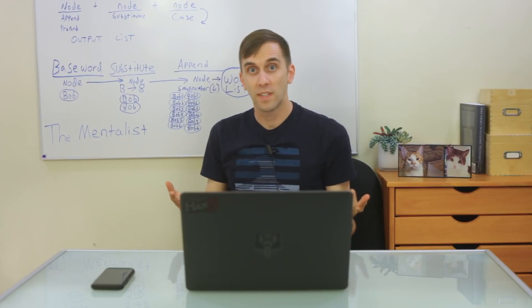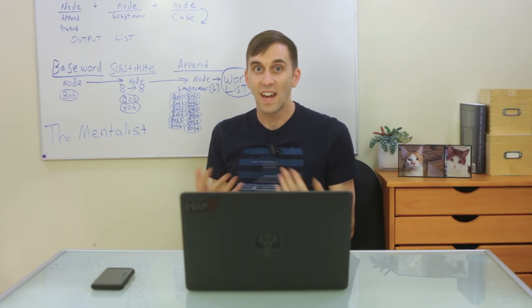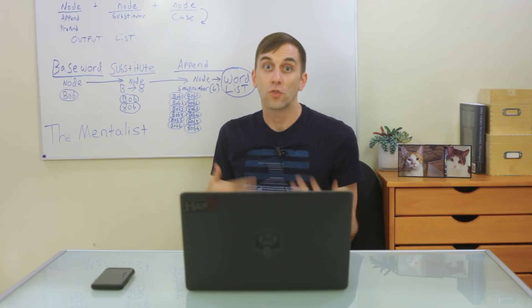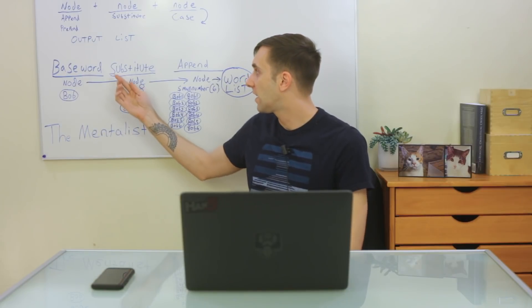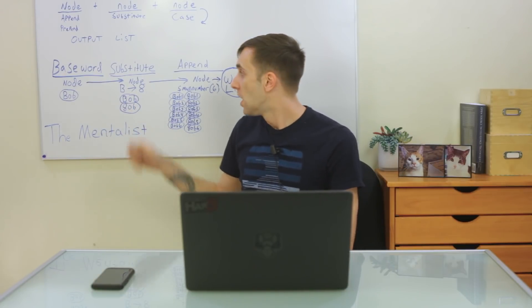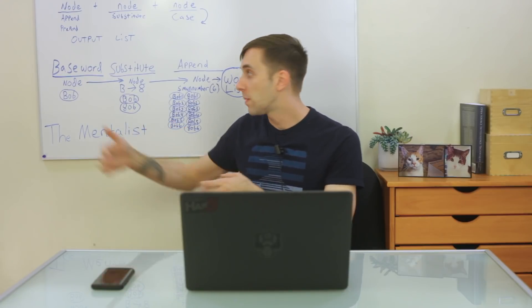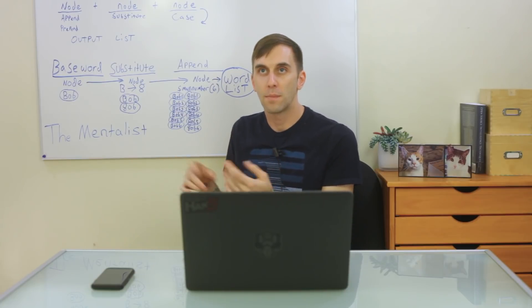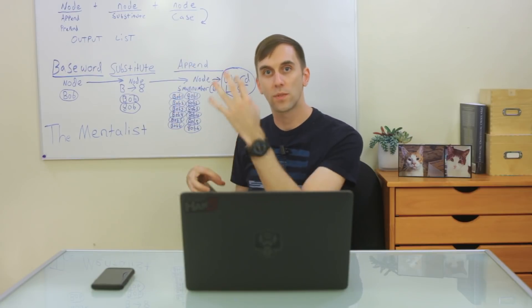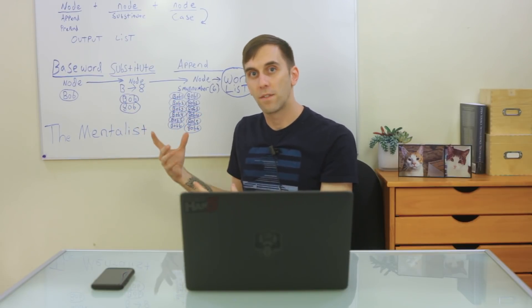Maybe their name is Bob. So let's give you an example. If we know that Bob might have chosen a specific kind of password, we might get a list that we can put through a brute forcer. We'll start with Bob, and if we add a substitute node that says we want to substitute the capital B in Bob for an 8 — just a number 8 — maybe Bob's a hacker and he likes leet speak. When we pass it through that, we see that the result is both Bob and 8ob. So now we have two different passwords instead of one, and when we pass it to the next function, which is to append every number up until 6, we'll get that split into 7 results each — including 0 — and we'll end up with both the mangled version of Bob with all the numbers at the end, plus one without any numbers, but also the modified version of Bob from the previous node.